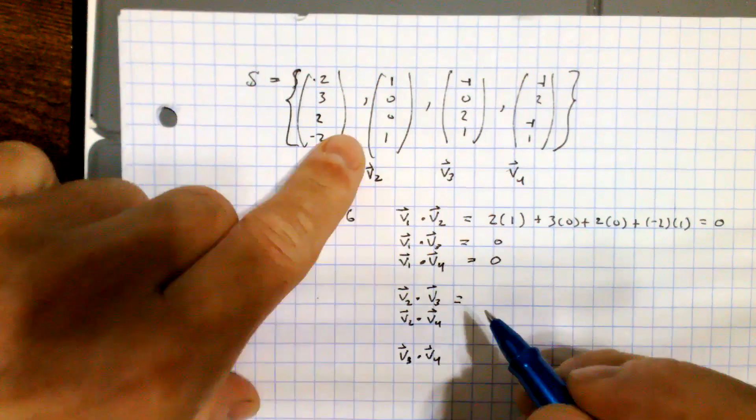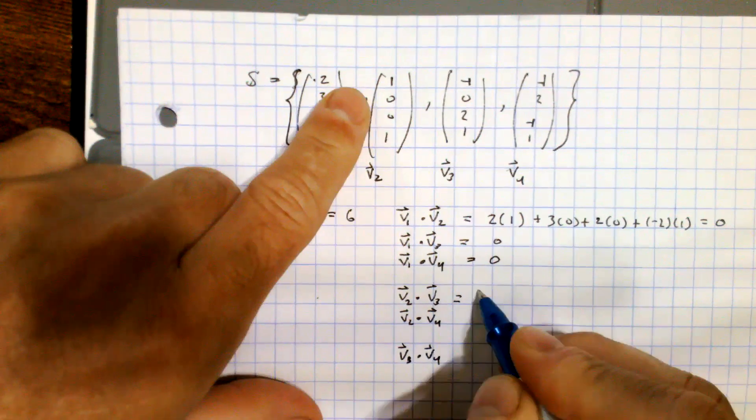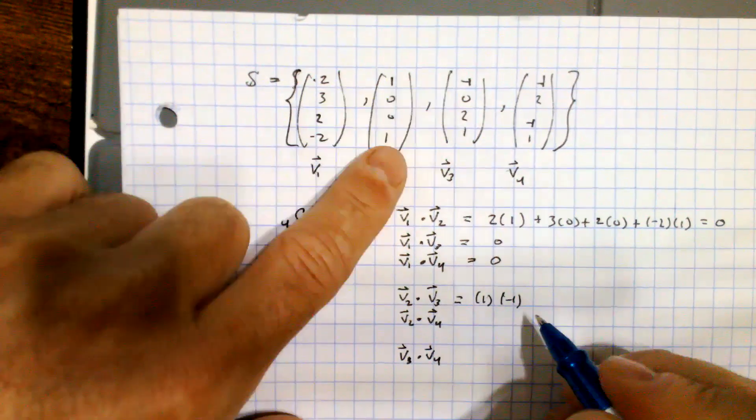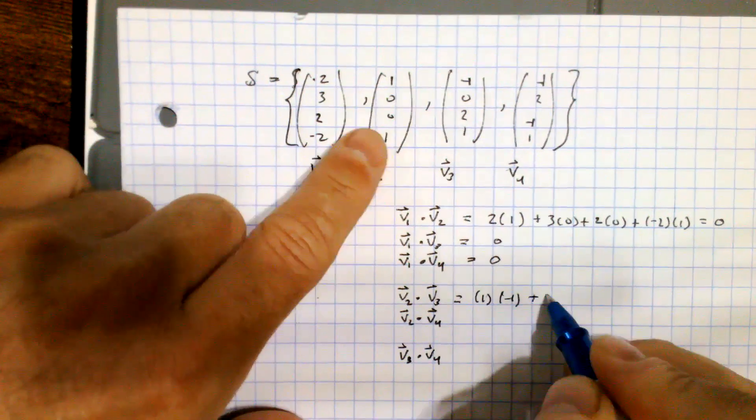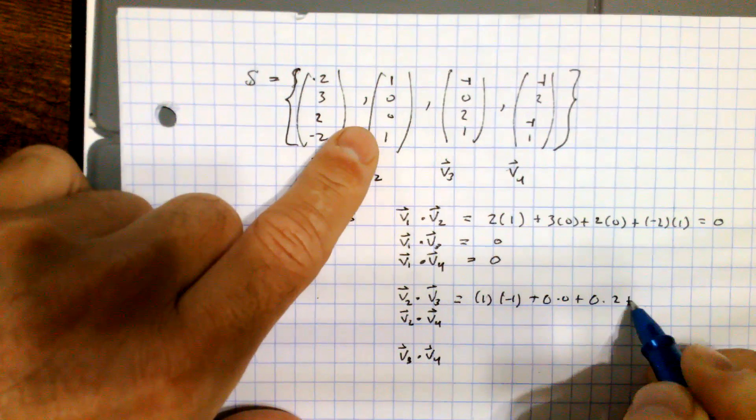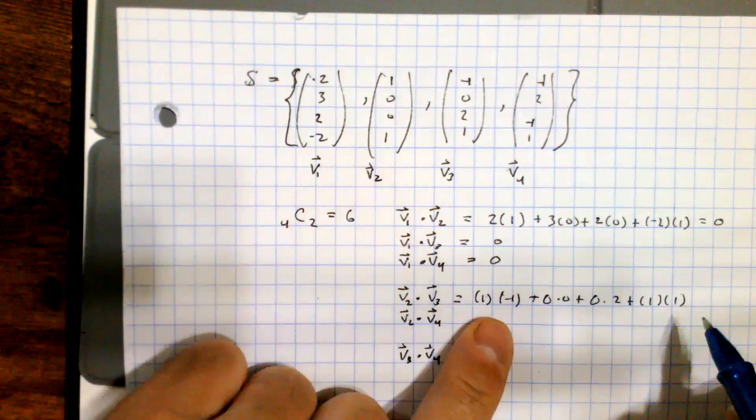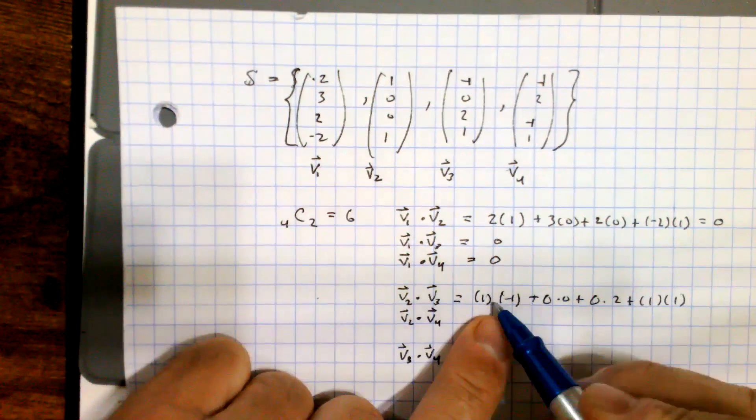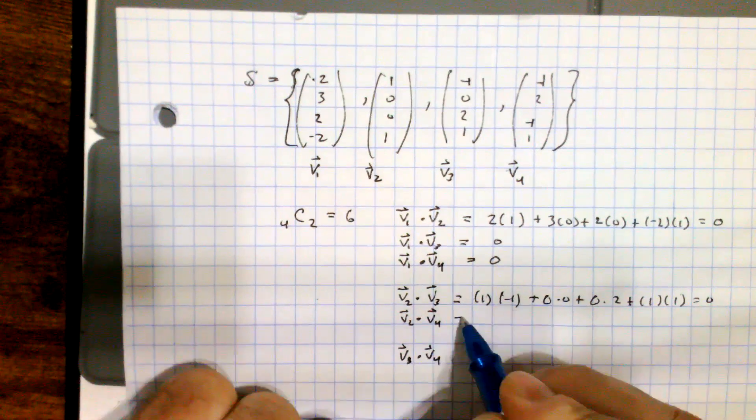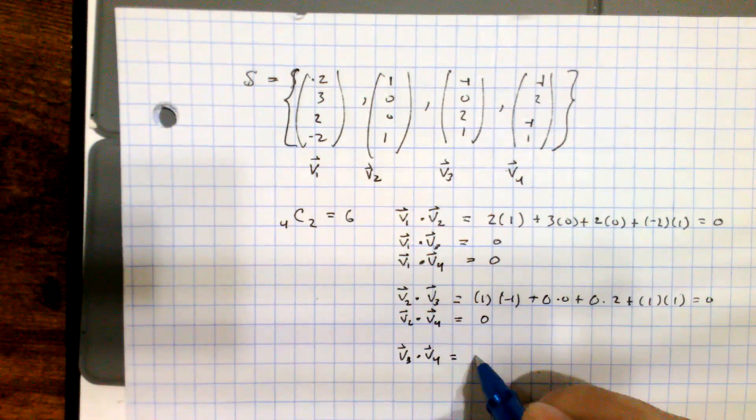Coming down here to B2 and B3, just to show that one more time, I have one from B2 times negative one from B3 plus zero times zero plus zero times two plus we have a one times one for the fourth component. And again, just like in the other ones, we have a negative one times one and one times one, so this again equals zero.